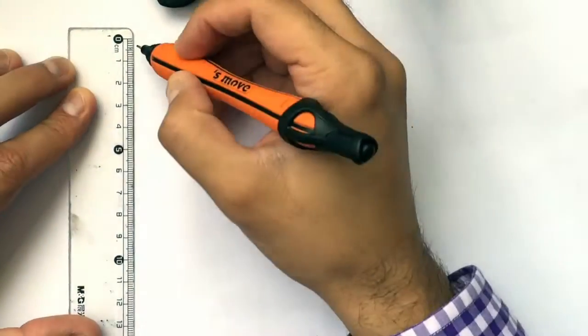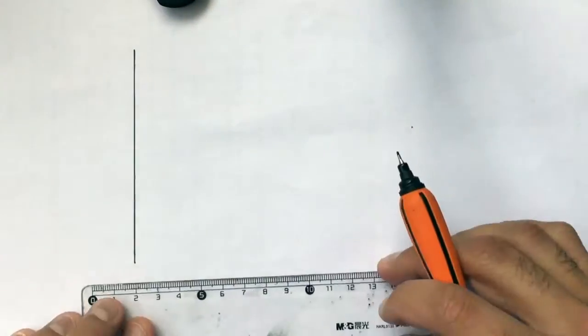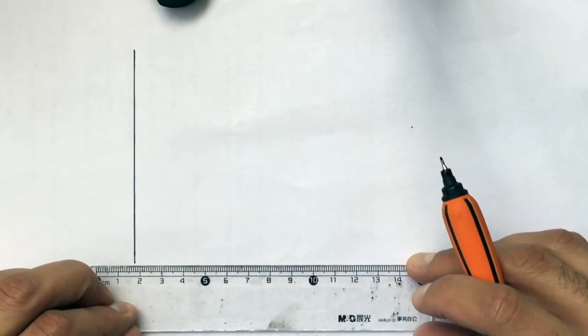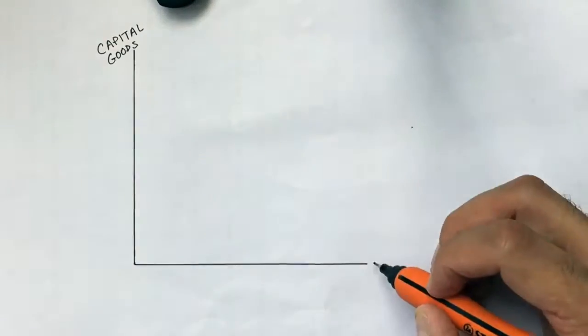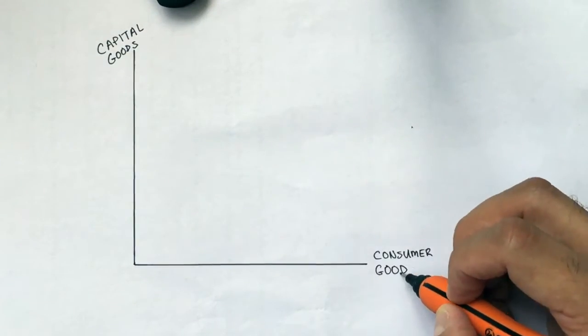How does this look? Let me show you on a graph. The very first thing that I'm going to do is draw my axes, and to simplify things, I will draw capital goods on the y-axis and consumer goods on the x-axis.